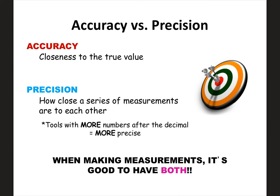A couple more terms: accuracy and precision. Accuracy is how close you are to the true value of something — how close you are to the real value. Precision is when you have a series of measurements and compare how close they are to each other. If something is precise, multiple measurements are all very close to each other. Instruments with more numbers after the decimal point are more precise. Ideally, we want both — close to the real value and consistent across repeated measurements.